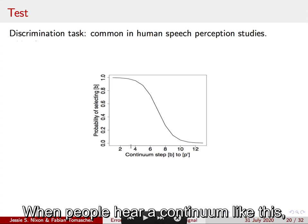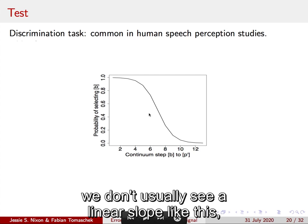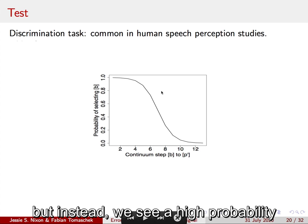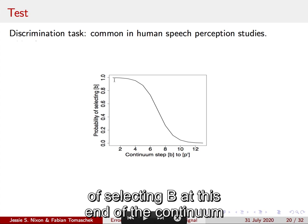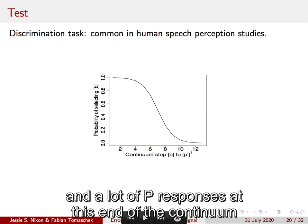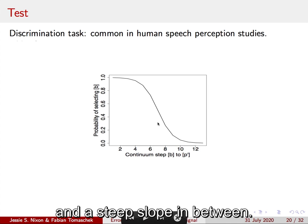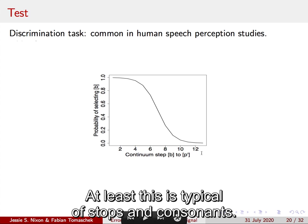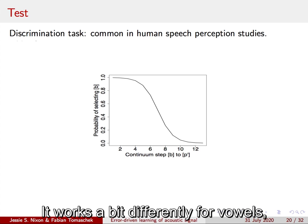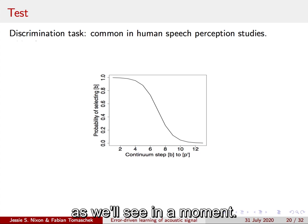When people hear a continuum like this, we don't usually see a linear slope like this, but instead we see a high probability of selecting B at this end of the continuum and a lot of P responses at this end of the continuum and a steep slope in between. At least this is typical of stops and consonants. It works a bit differently for vowels, as we'll see in a moment.